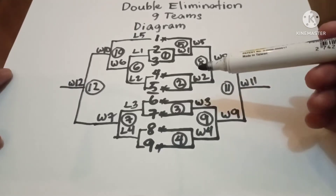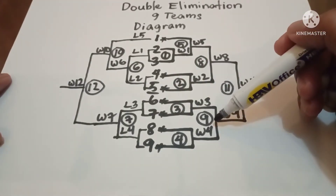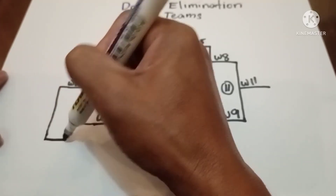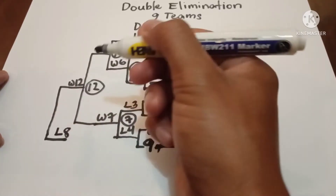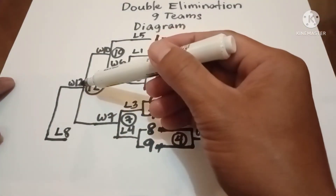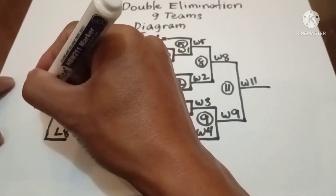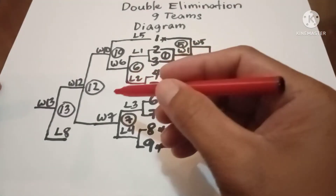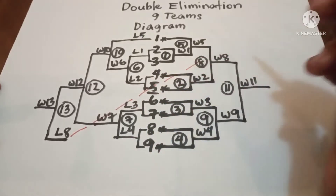Our concern in the winners bracket is Loser 8, Loser 9, and Loser 11. Loser 8 is placed here and plays against Winner 12 in Game 13, giving us Winner 13. Don't forget to write the broken line indicating Loser 8 from Game 8.